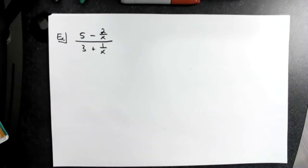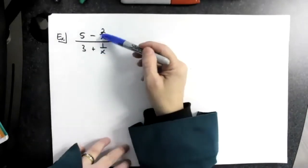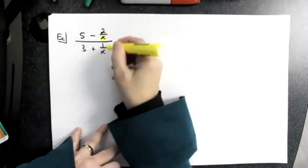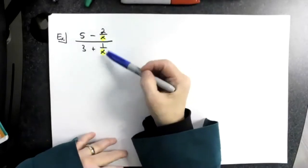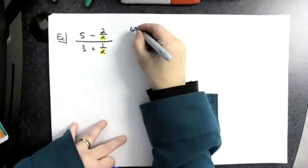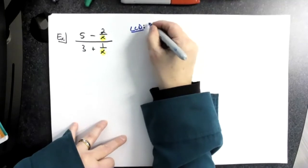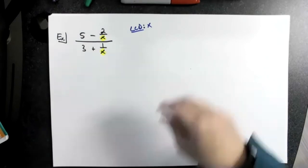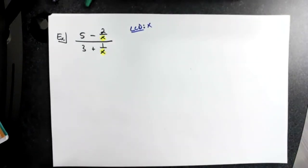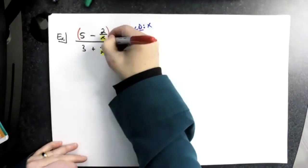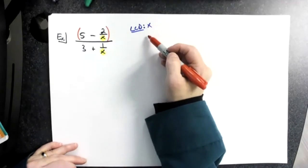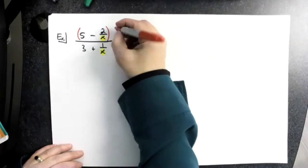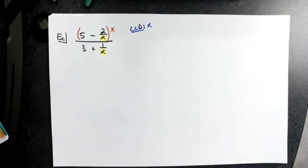What we're going to do is look at wherever there are fractions — there's a fraction here in the numerator and a fraction here in the denominator — and look at just those individual small denominators to find the least common denominator. This one's easy because they're both x, so the least common denominator is x. I'm going to multiply through the top by x and the bottom by x. I write x up high so I remember it's really x over 1, but writing it up high keeps the problem cleaner.